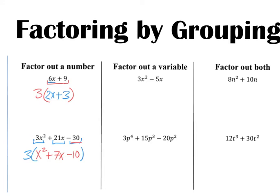We can also do the same thing with a variable. I'm going to rewrite the first one to show a handy way to look at this, which is 3 times x times x. Then you've got a 5x here. We've got an x in common in both of these, so I'm going to do the stuff that's left over — my 3x and my 5 — and that's again a minus we leave on the inside.